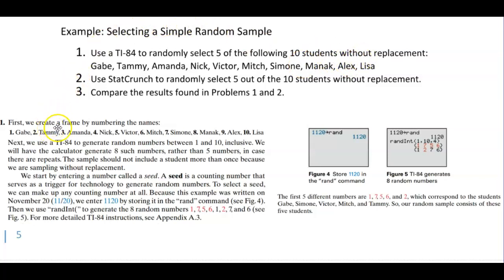First we have to create a frame by numbering the names. We need to attach a number to each particular student. So we're going to assign one to Gabe, two to Tammy, three to Amanda, four to Nick, and so on all the way to ten.